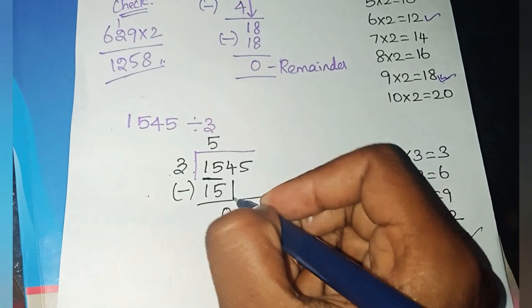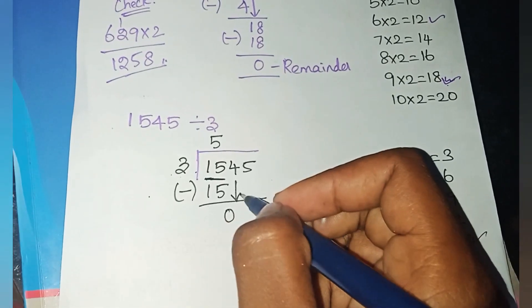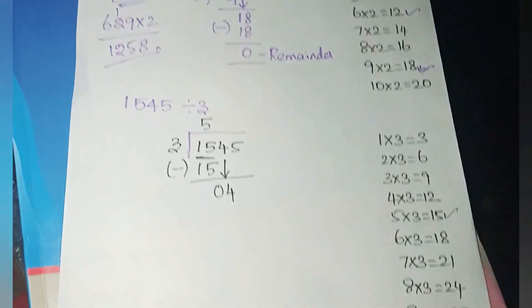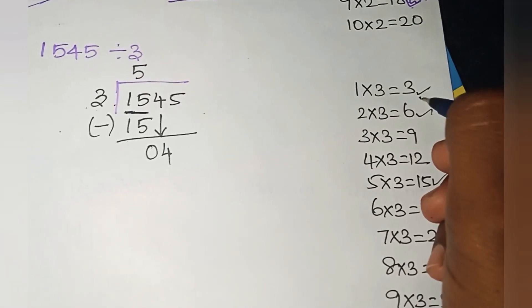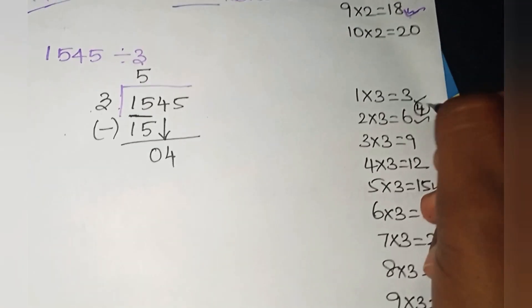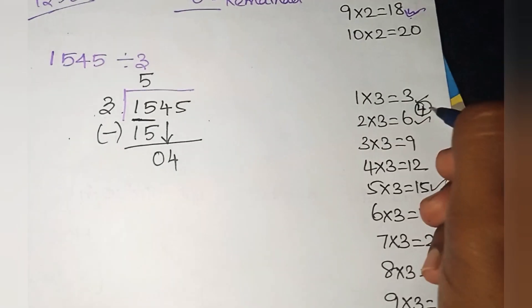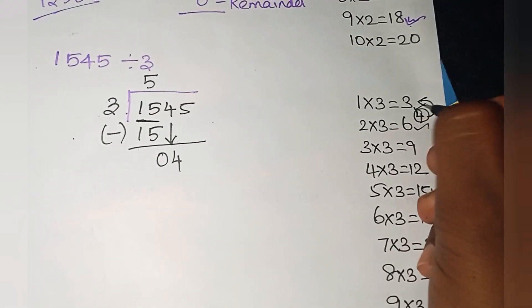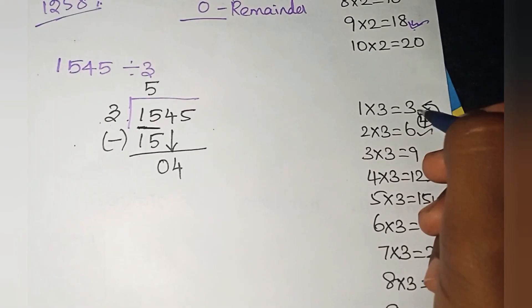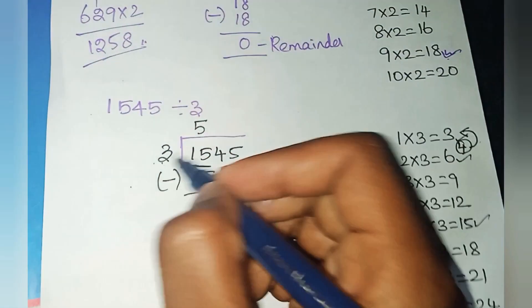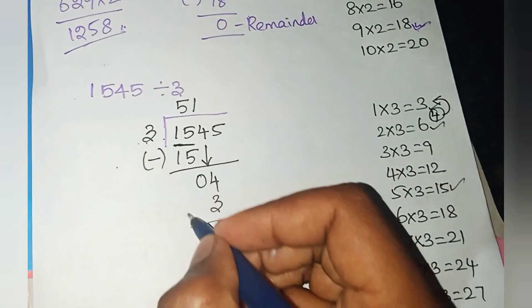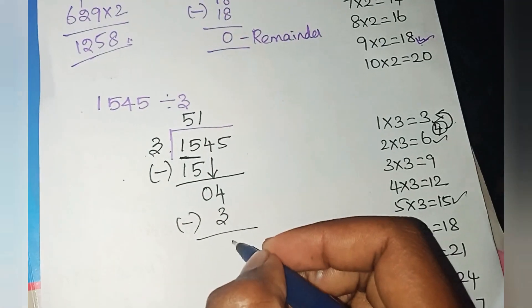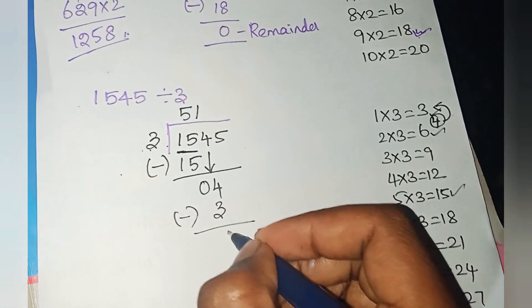Next, what is the next step? You should bring down the third number. Third number is 4. There is no 4 in the 3 times table. 4 will come between 3 and 6. So the smaller value is 3. How many 3's are 3? 3 into 1 is 3. Next step is subtraction: 4 minus 3 is 1.